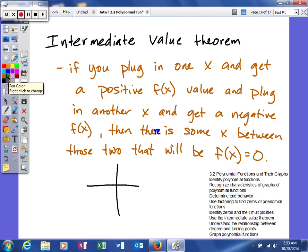So if I plug in some x value and get a positive, and another x and get a negative, somewhere in between, because it's a continuous graph, it has to cross the x-axis.